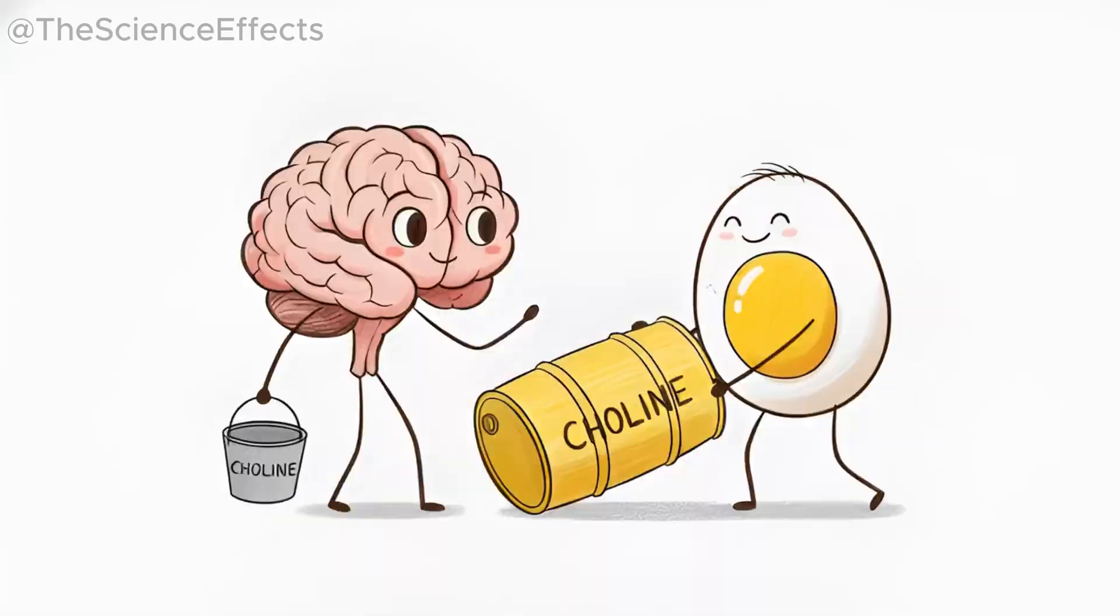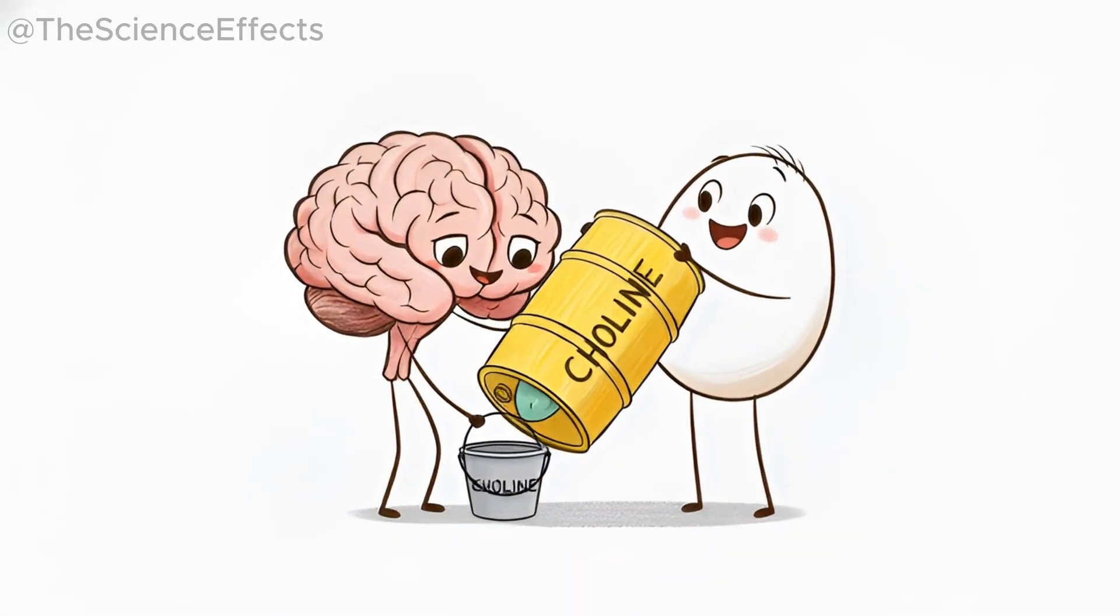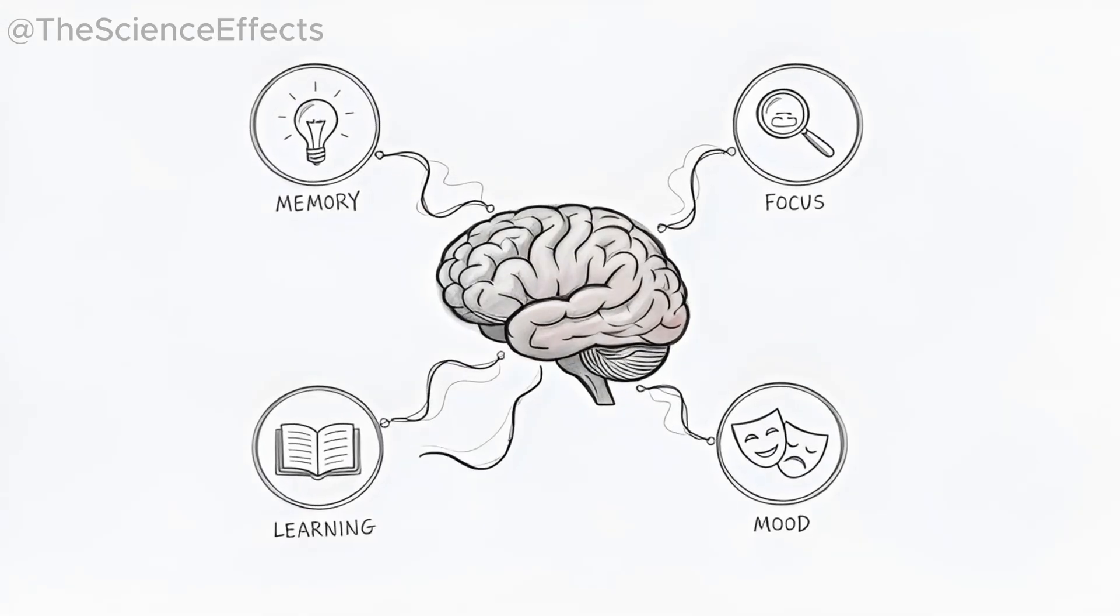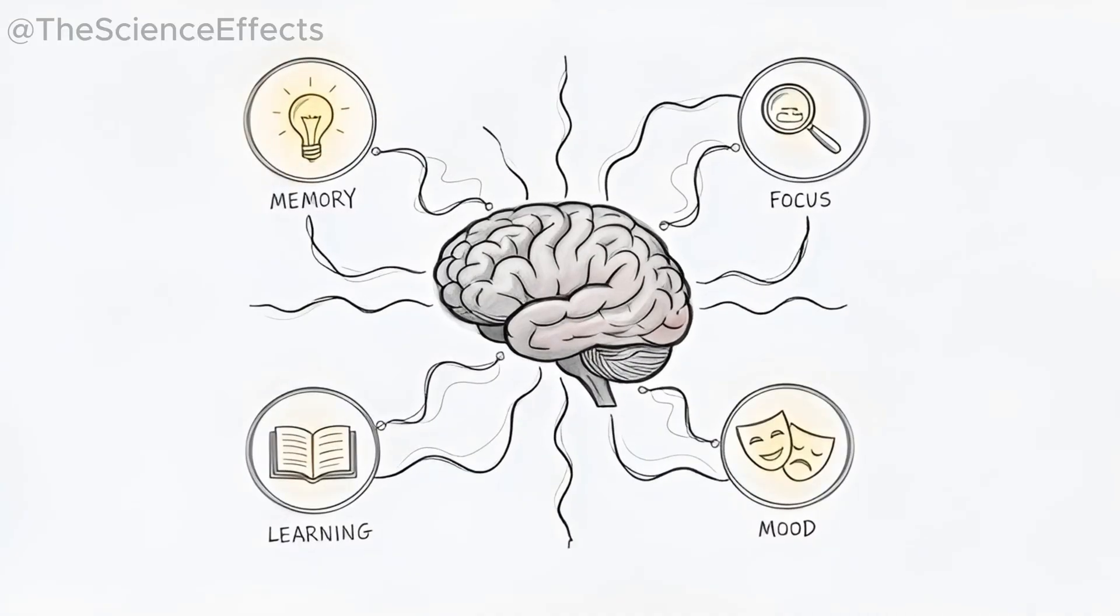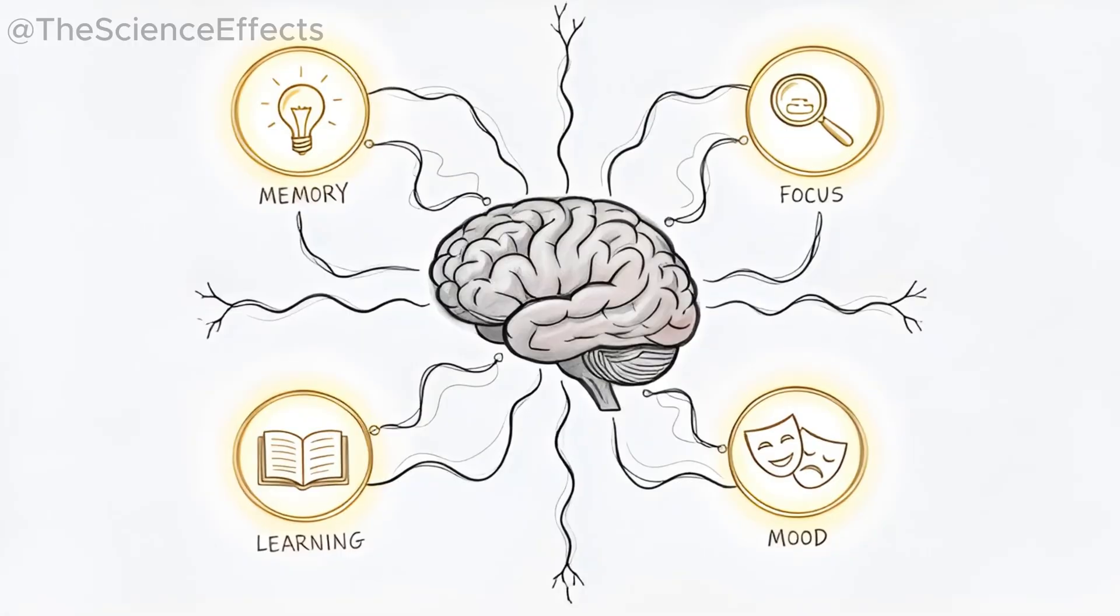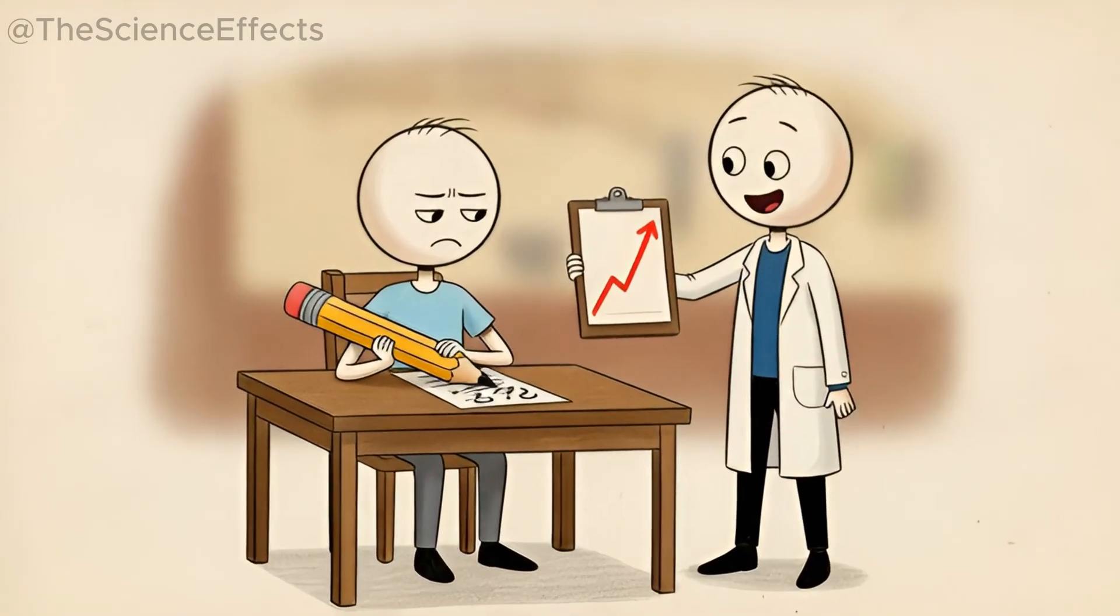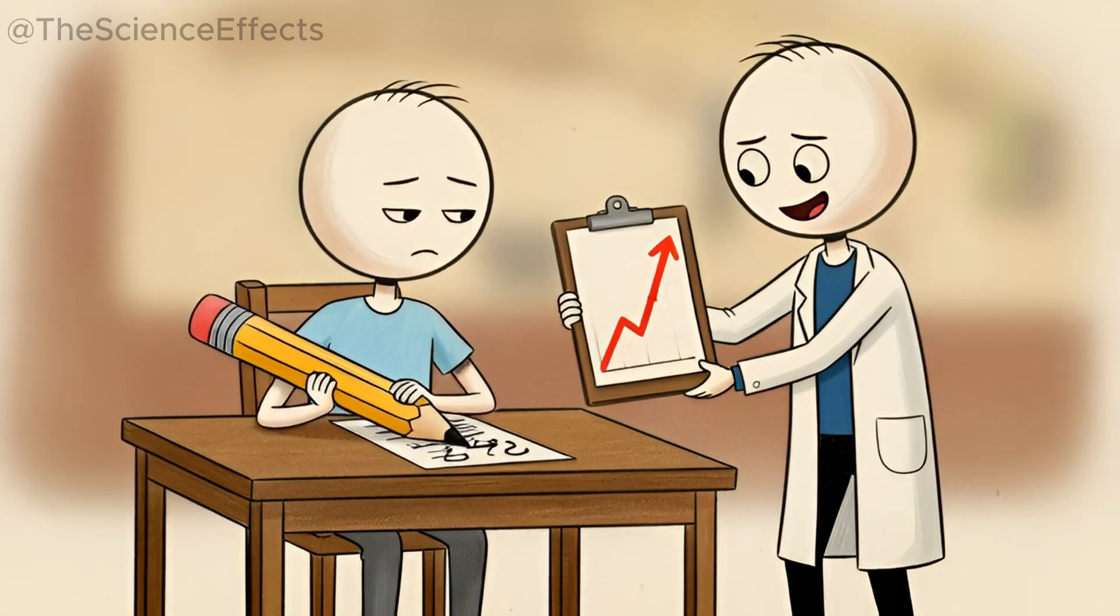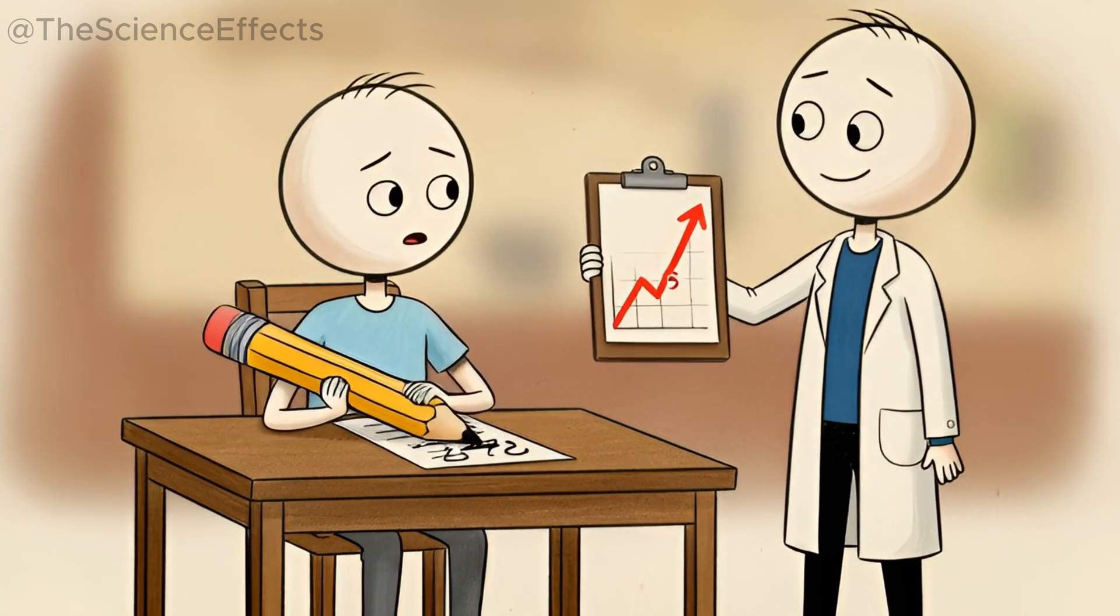Here's what really happens inside your body after you start eating eggs daily. The brain upgrade: eggs are the number one dietary source of choline. Your brain uses choline to make acetylcholine, essential for memory, concentration, learning, and mood. A 2021 study in the American Journal of Clinical Nutrition found that adults with higher choline intake performed better on cognitive tests.